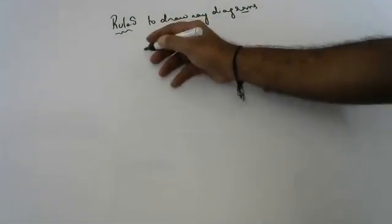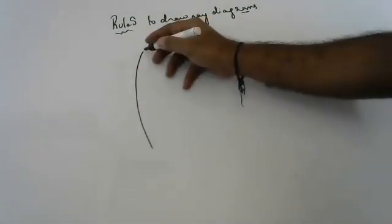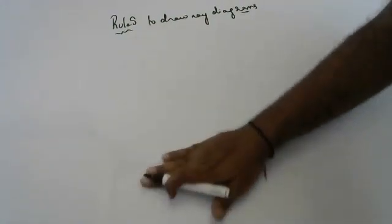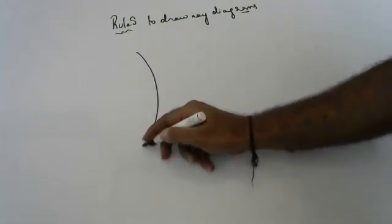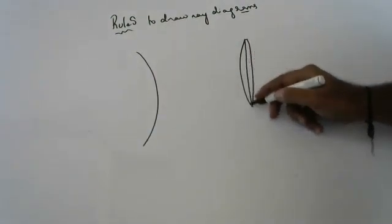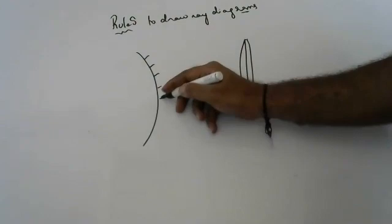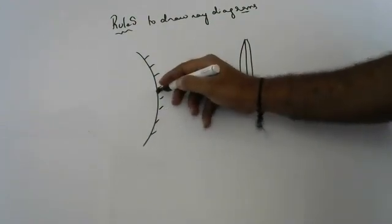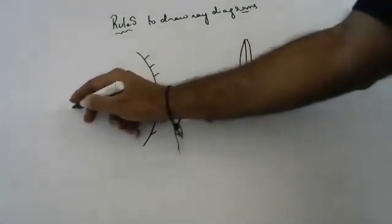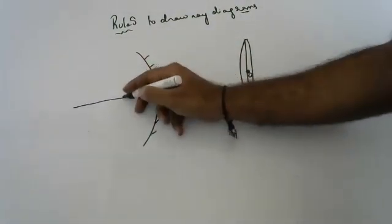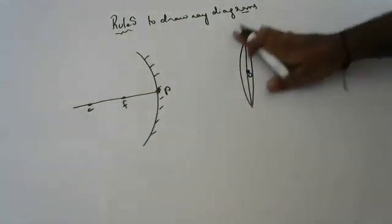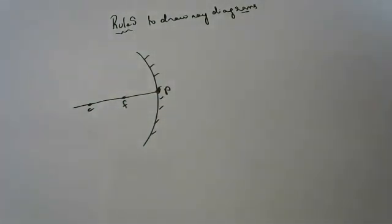Whether it is lenses or mirrors, let me explain with a lens so that you will understand very easily, or with a mirror also — anything is okay. First I will explain with mirror and also along with the lens simultaneously. This is the lens and this is the mirror. This is called the optic axis, this is called the principal axis. This is focus, and this is center of curvature.